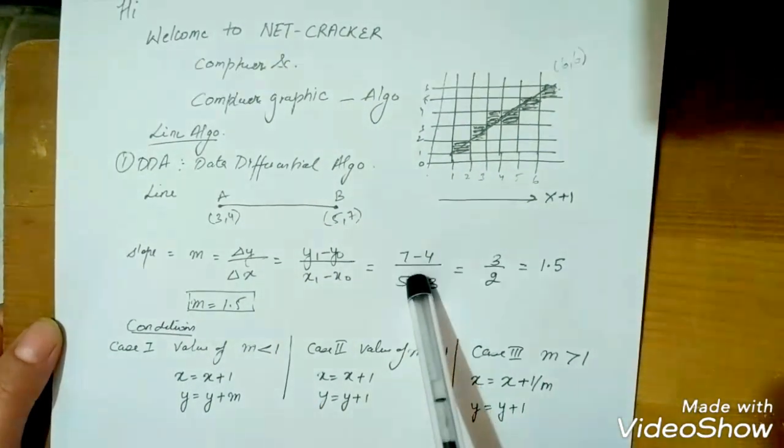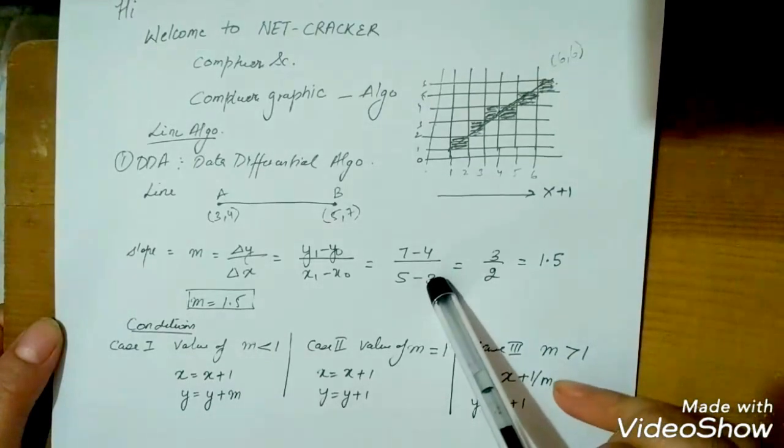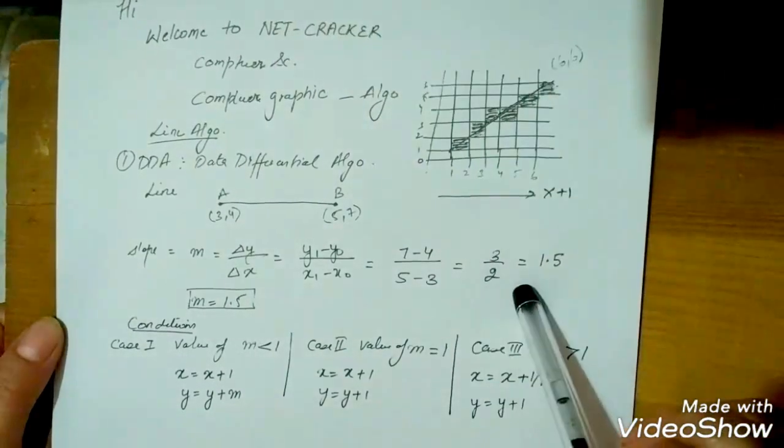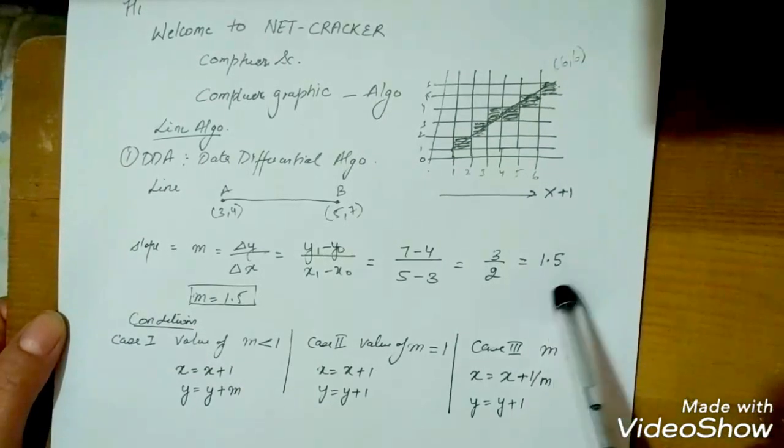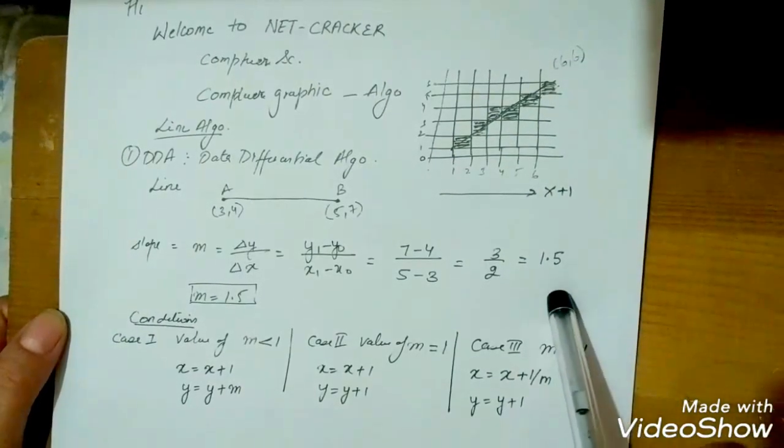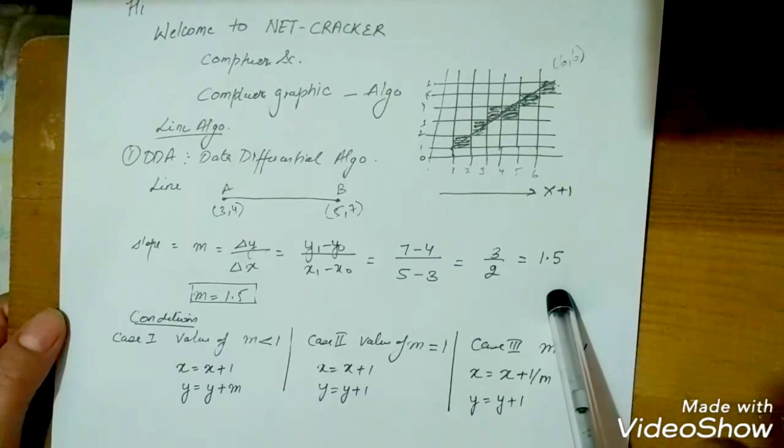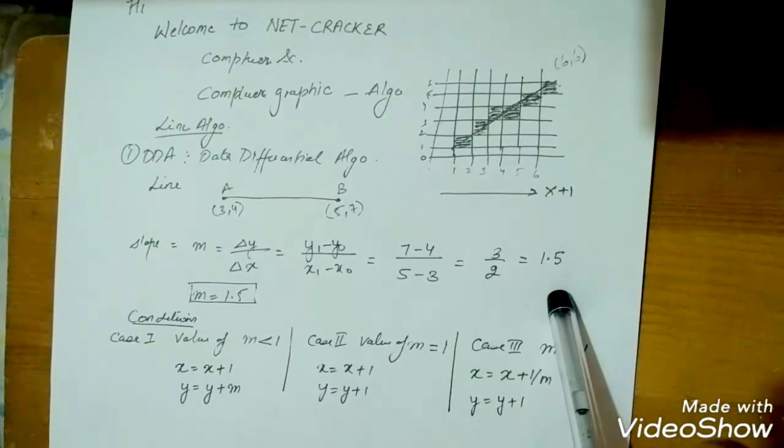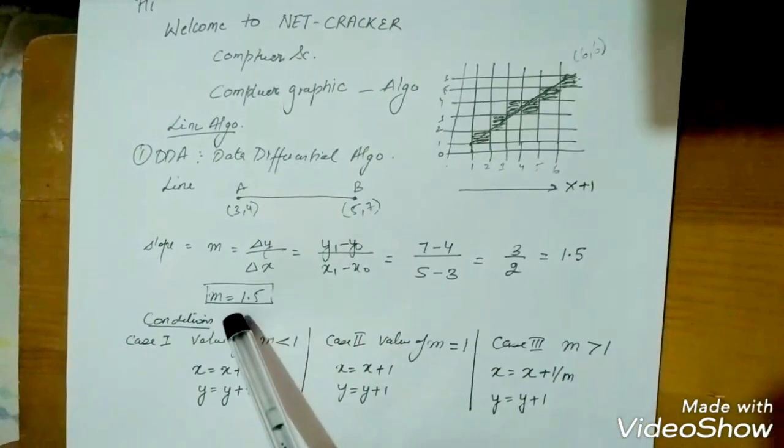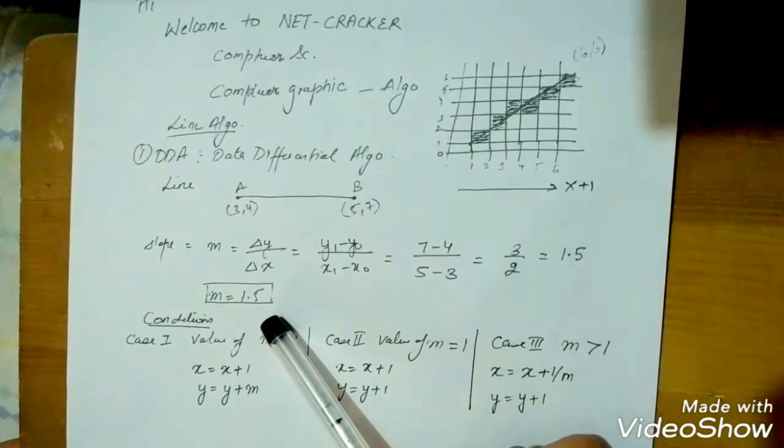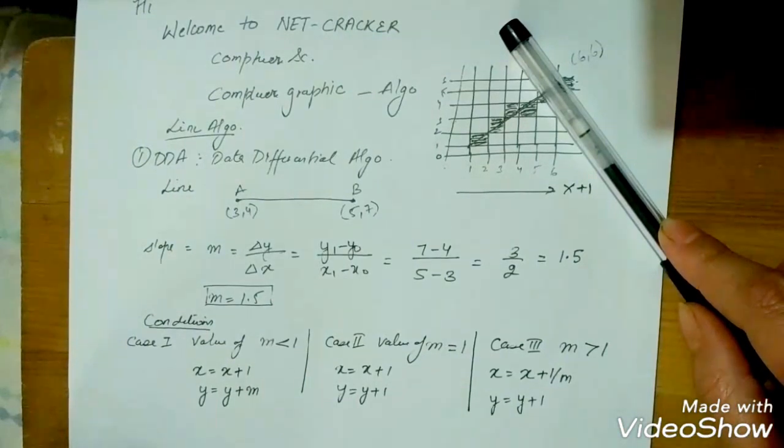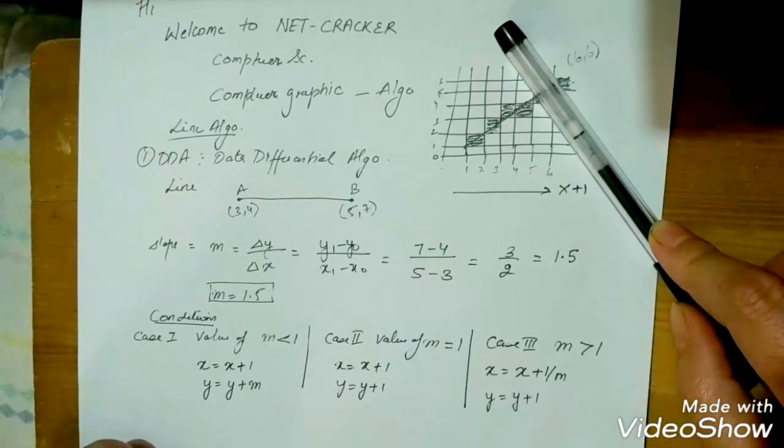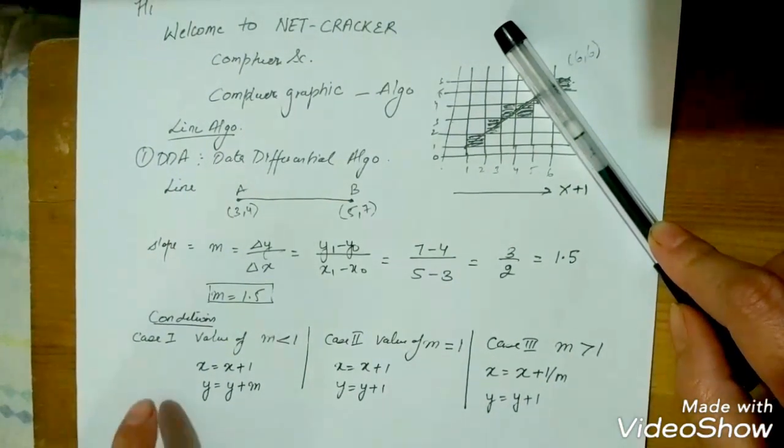We subtract: (7-4)/(5-3), which gives us 3/2 = 1.5. On the basis of the value of slope, we have three conditions which we need to follow. Here the slope m = 1.5. Case 1: when the value of m is less than 1, the value of x is incremented by 1 and the value of y is incremented by the slope.